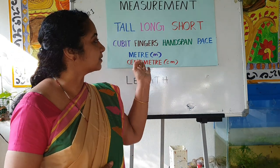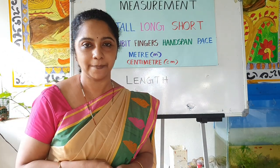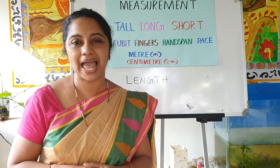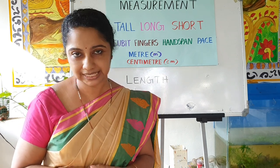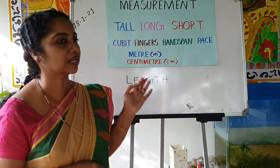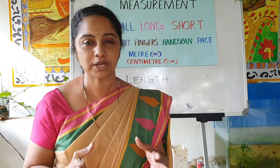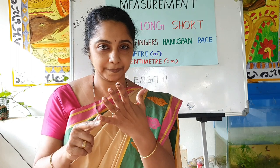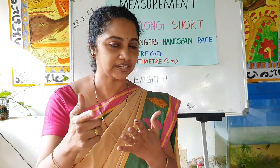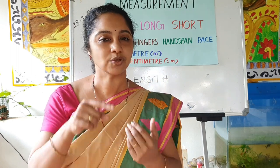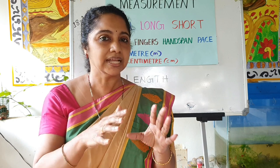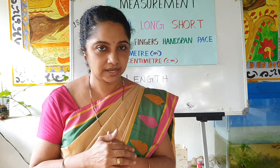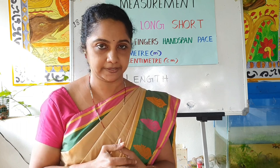But this type of measurement has a problem — these measurements are not accurate, not correct. It depends upon our body size. My hand span is bigger, longer than yours, because my hand is big and your hand is small. So these types of measurements vary. They are not accurate.